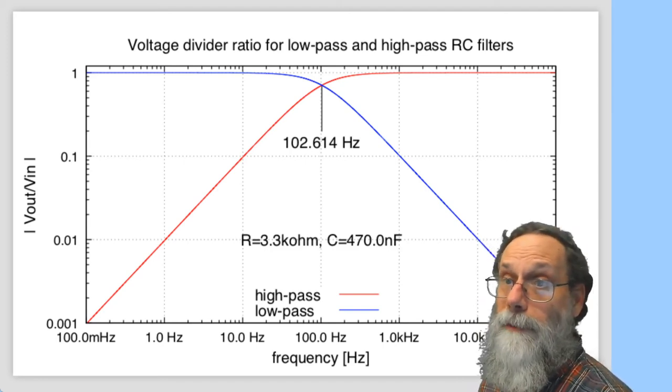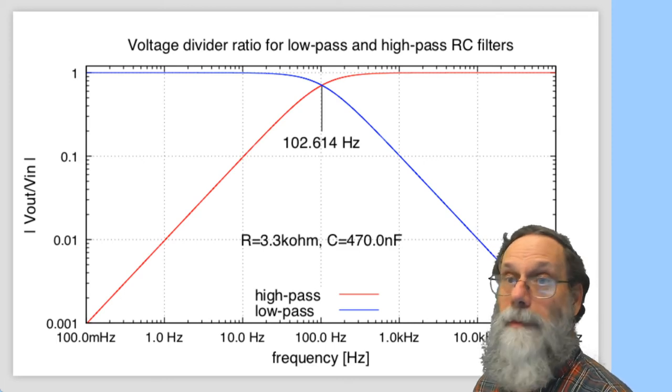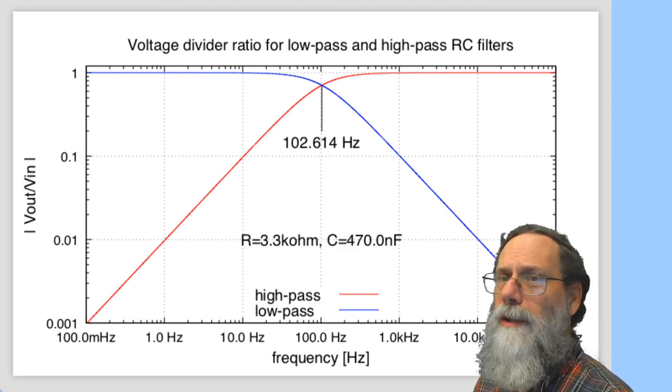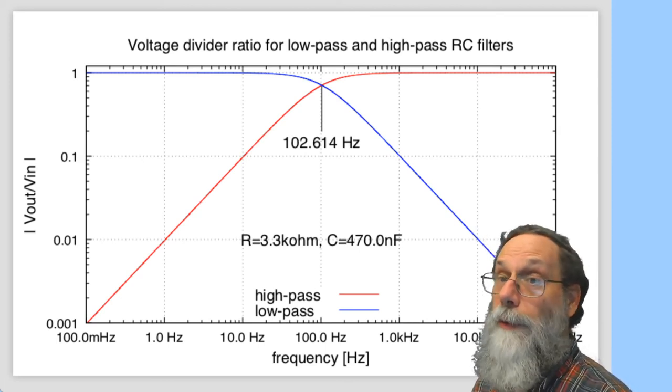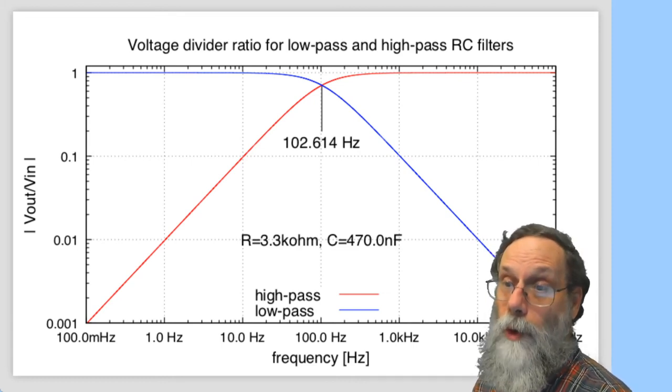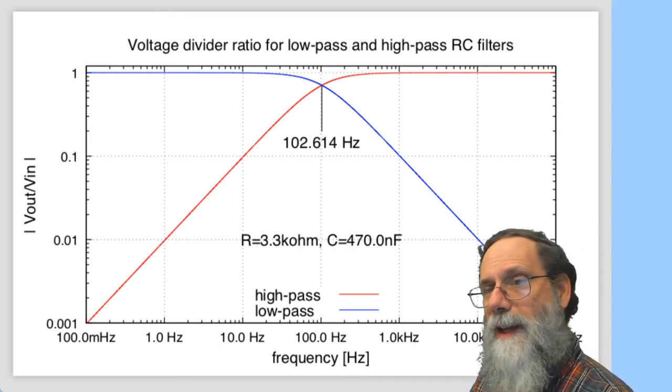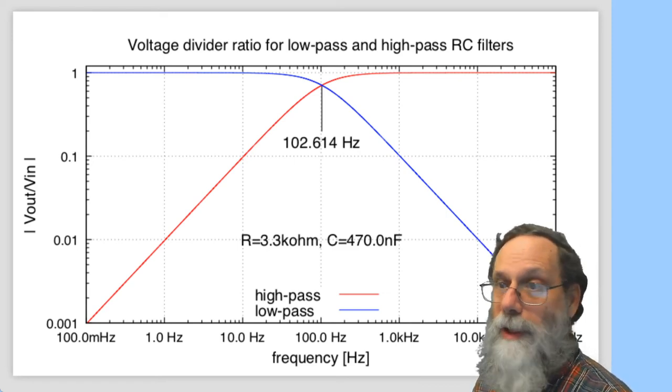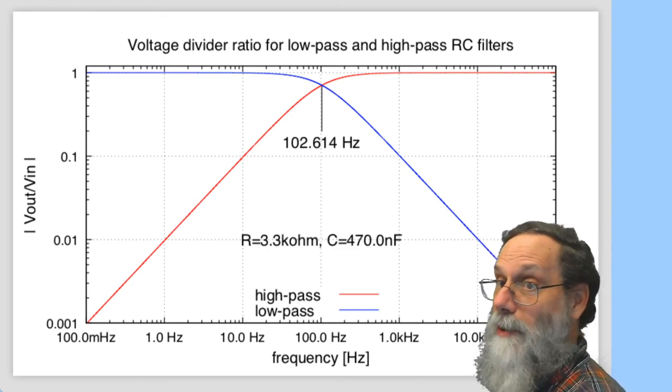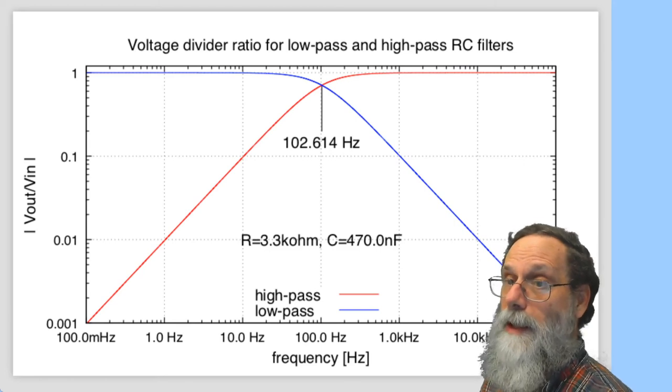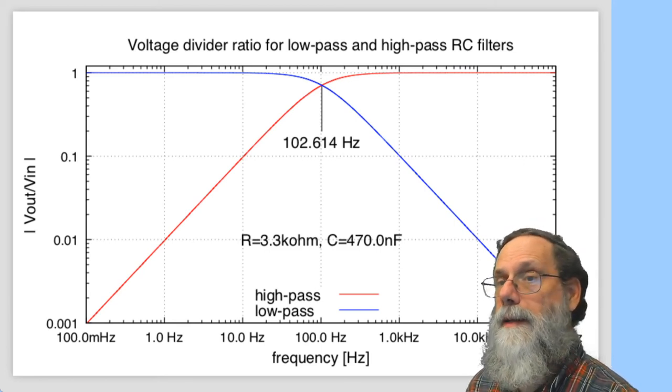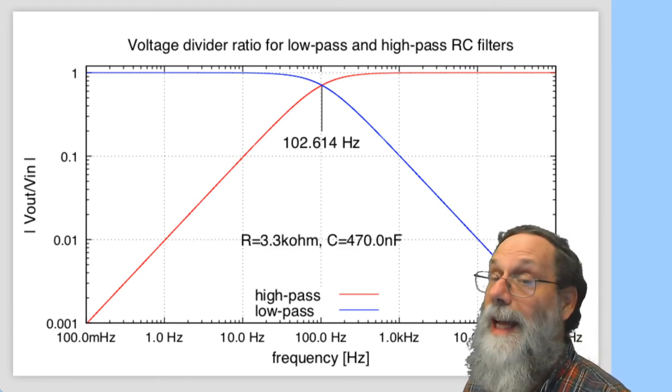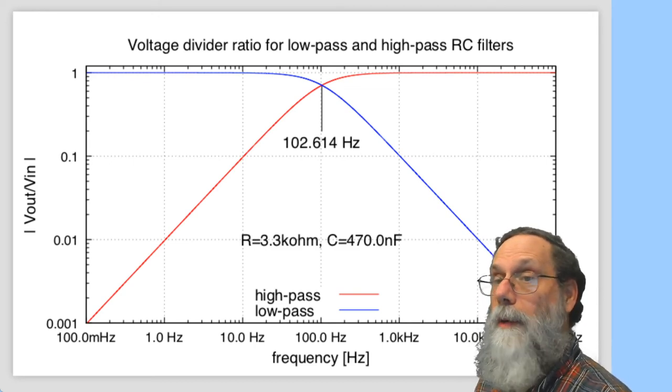Okay, so the low-pass filter you can see is basically constant, gain of one, until you get to within maybe a factor of three of the corner frequency. And then it's got this kind of rounded curve, and then it drops down a nice straight line here, one decade per decade. And that is exactly the behavior that we would expect.